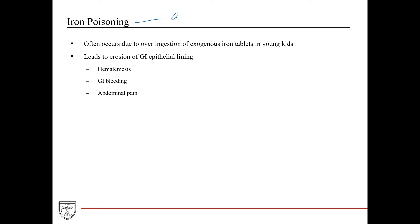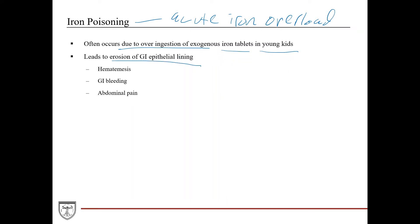Iron poisoning refers to acute iron overload — you can also have chronic iron overload due to other types of pathology. This is usually a result of over-ingestion of exogenous iron tablets in young children. Iron is really corrosive to the lining of the GI tract, so it erodes away at the GI epithelial lining, causing GI symptoms: hematemesis (vomiting blood), GI bleeding, and abdominal pain. The way you treat iron poisoning is similarly with chelation agents.